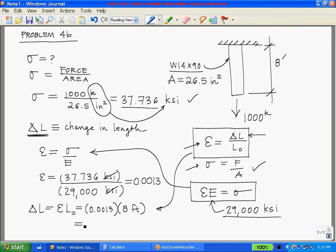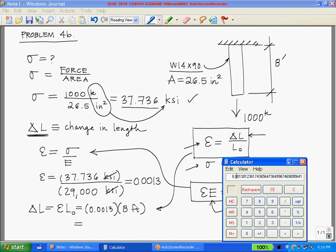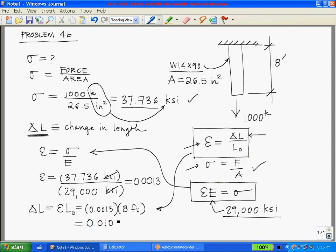We know our strain is 0.0013, our original length is 8 feet. Let's put that in the calculator: 0.0013 times 8 feet equals 0.0104, and our units are feet.